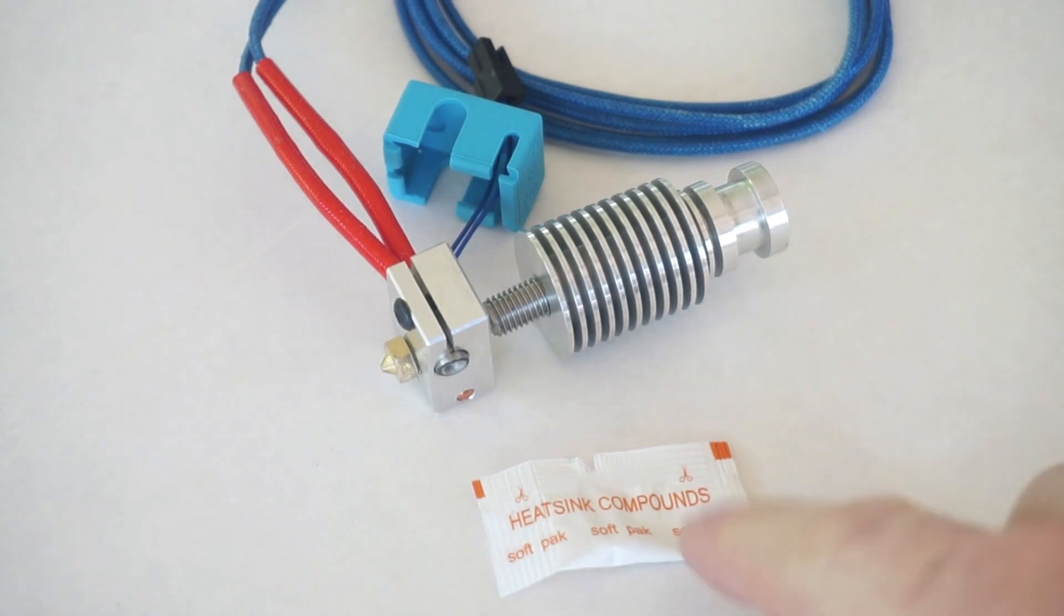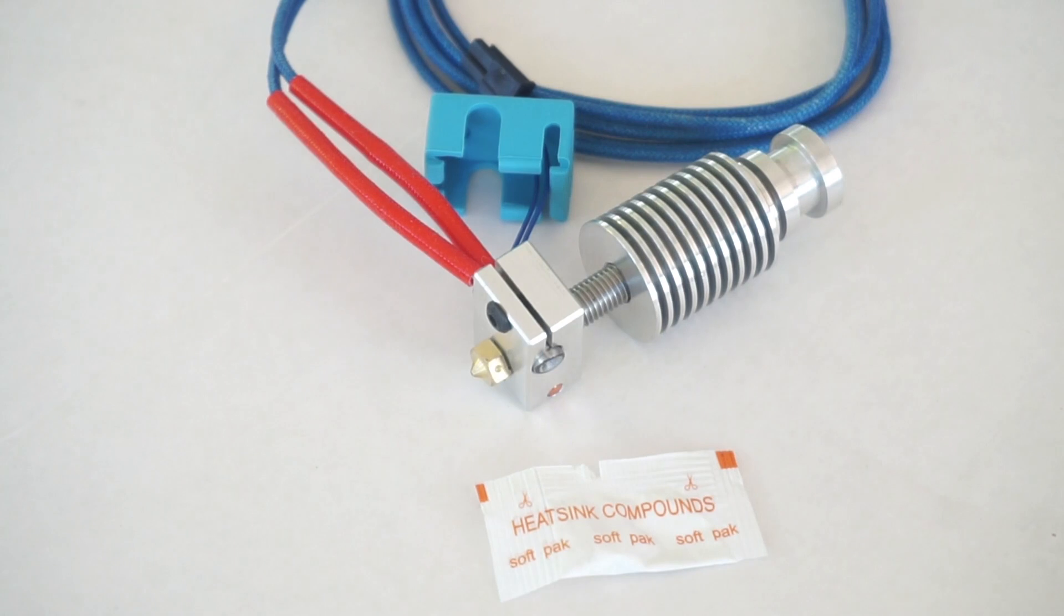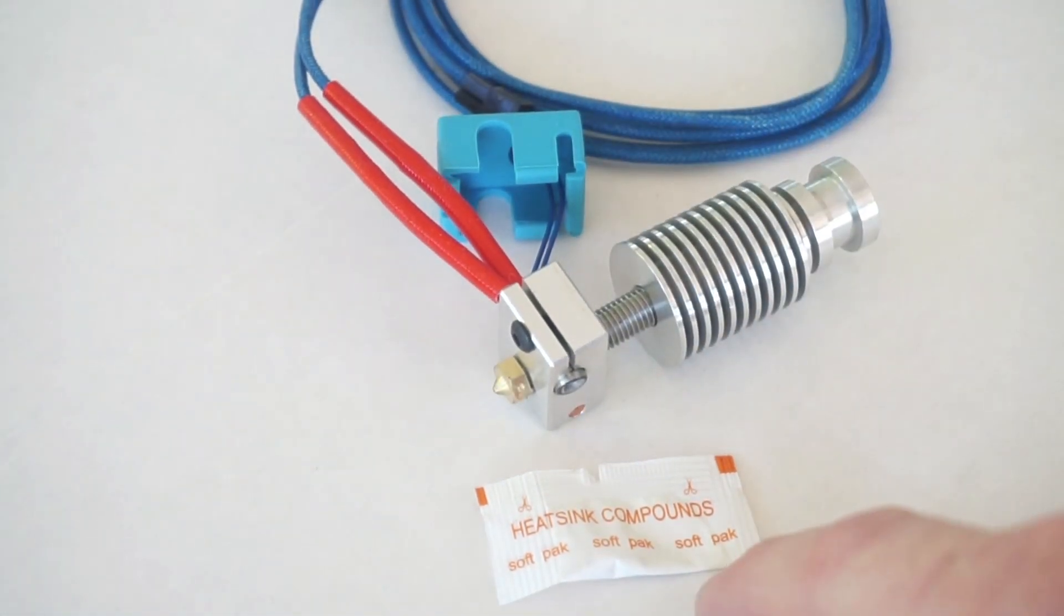Next we're going to apply some heat sink compound right here to this inside piece of this thread and then screw this in place. Don't use all of this because it's more than you need.